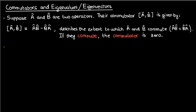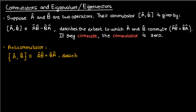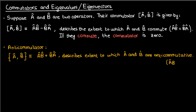Now there's also something called the anti-commutator, which is denoted using braces instead of square brackets, and it's just a-hat b-hat plus b-hat a-hat. Intuitively the anti-commutator describes the extent to which a-hat and b-hat are anti-commutative, kind of like how the commutator describes commutativity. Anti-commutative just means that swapping a-hat and b-hat gives the negative result.